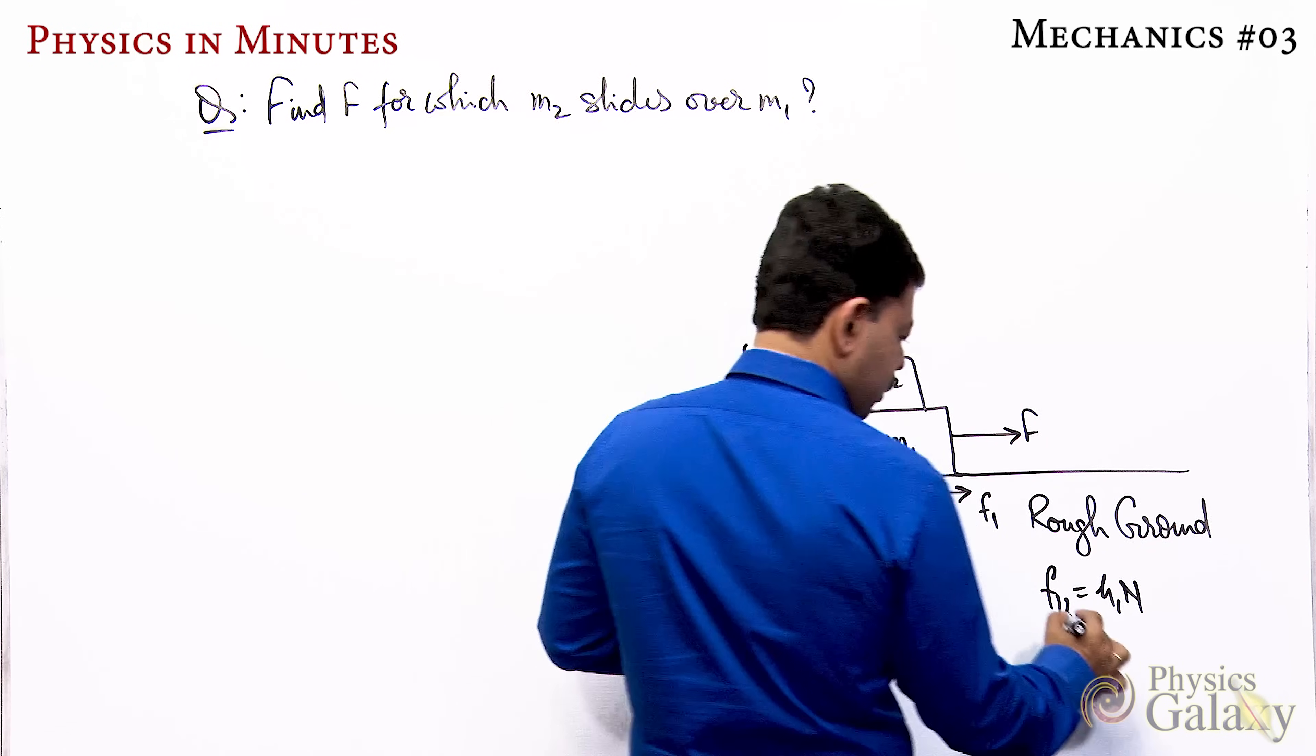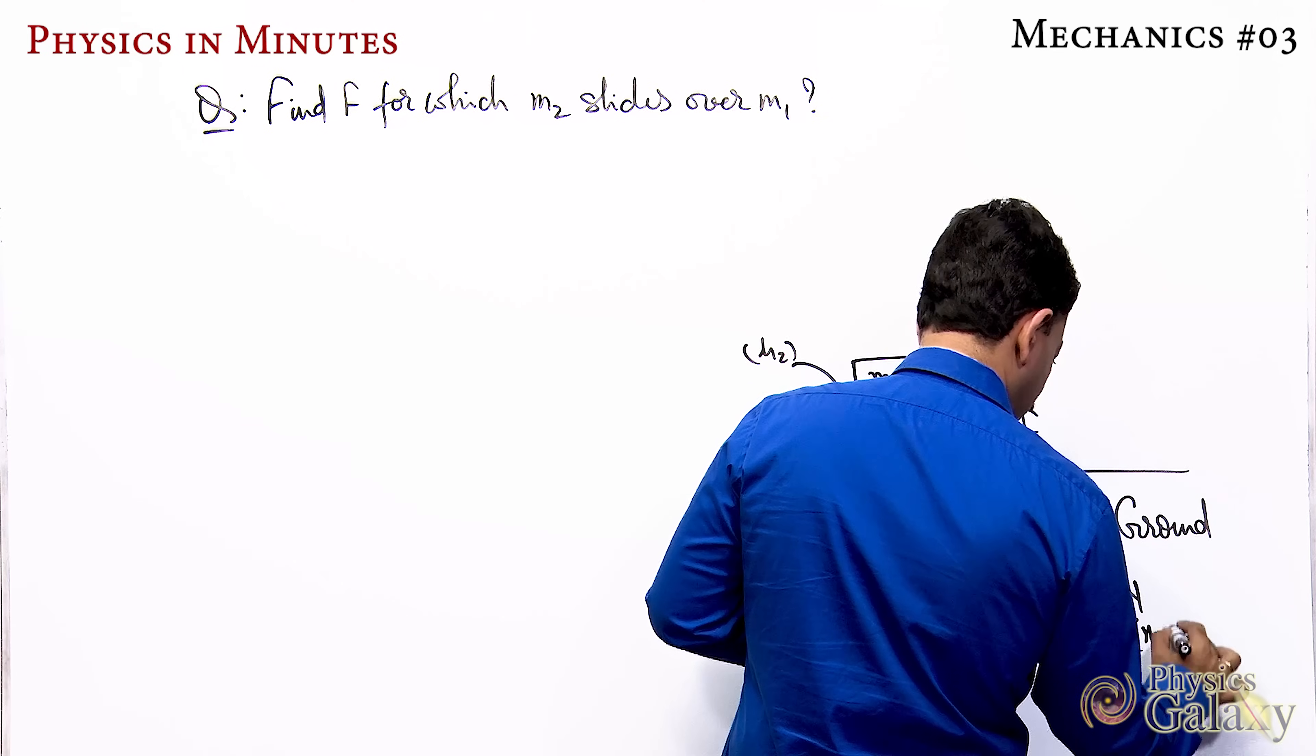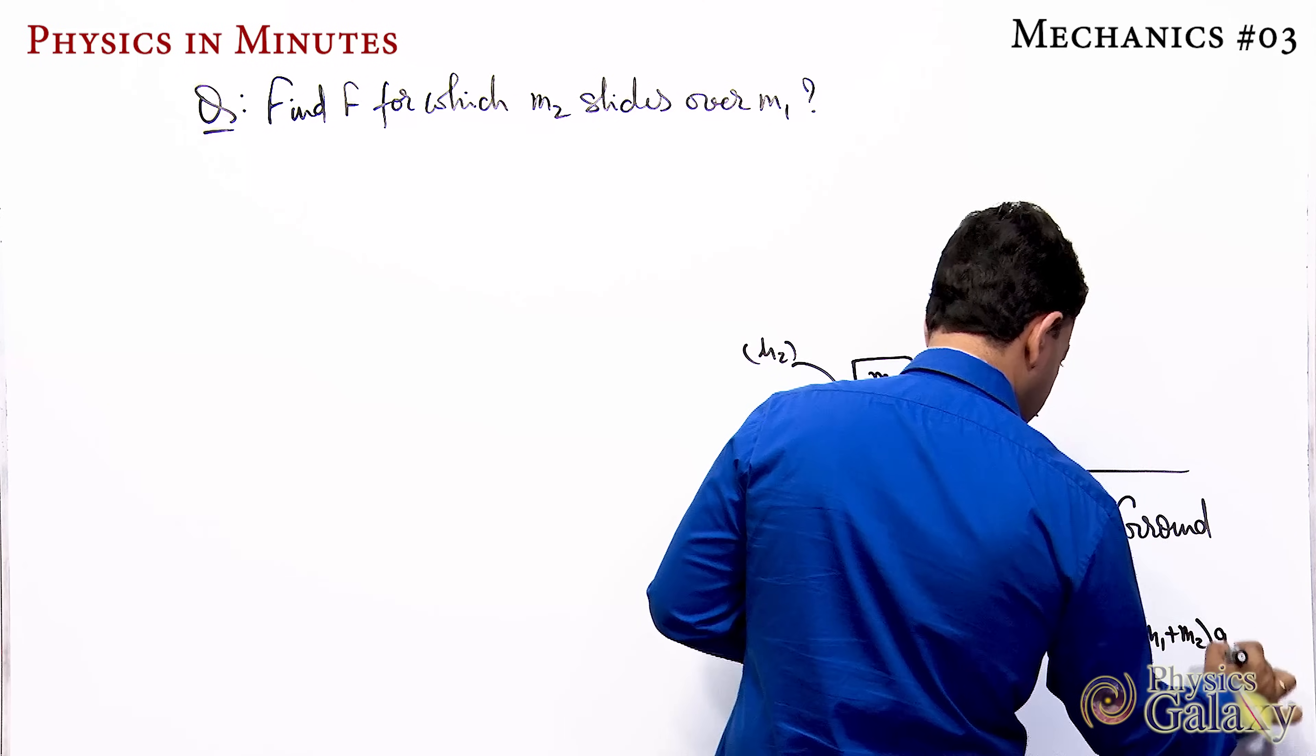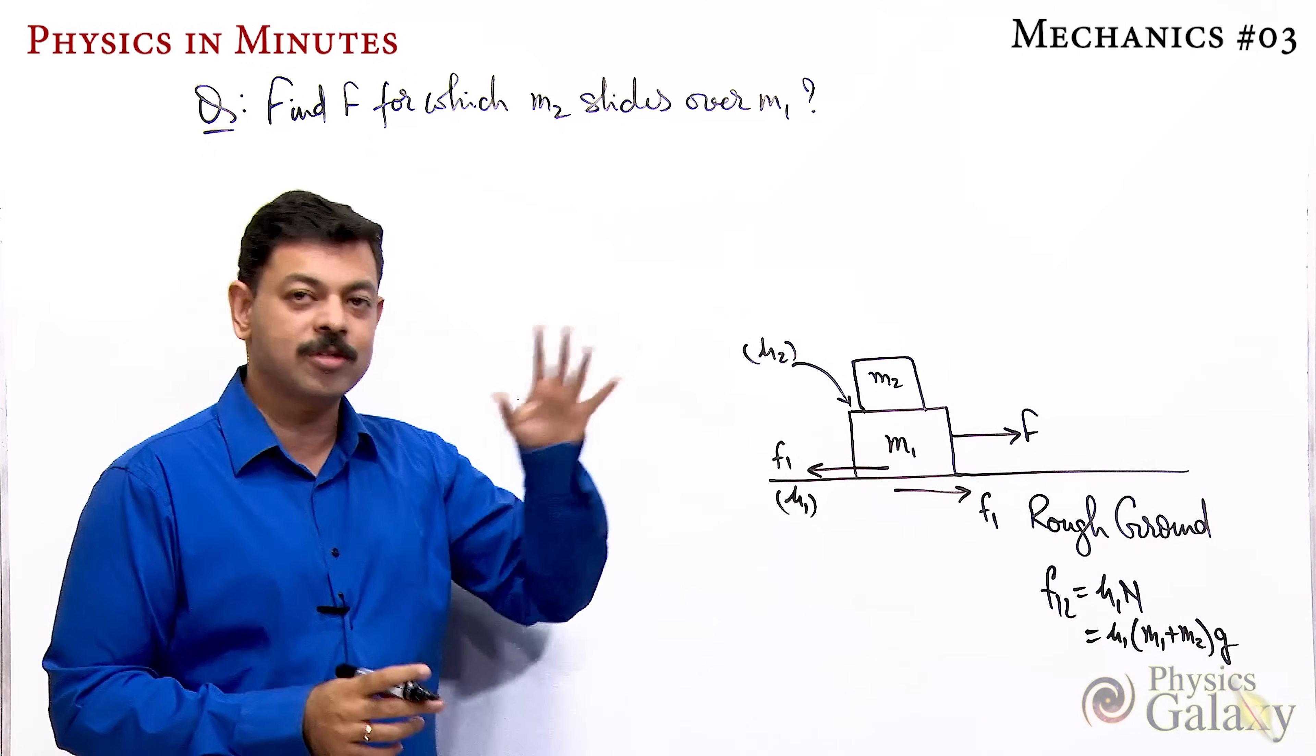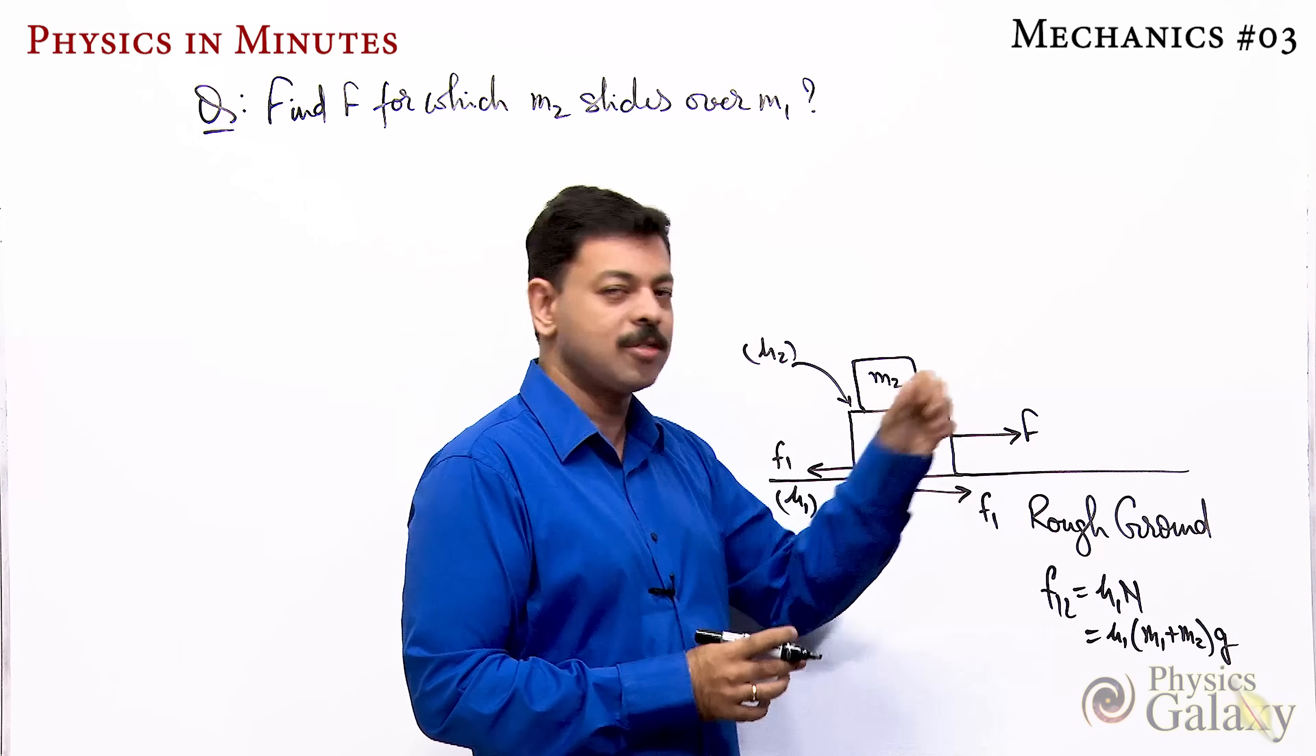So this limiting friction will be μ1 times (m1 + m2) g in this case when m2 is placed. Now as the force value equals the limiting value, the whole system will move.